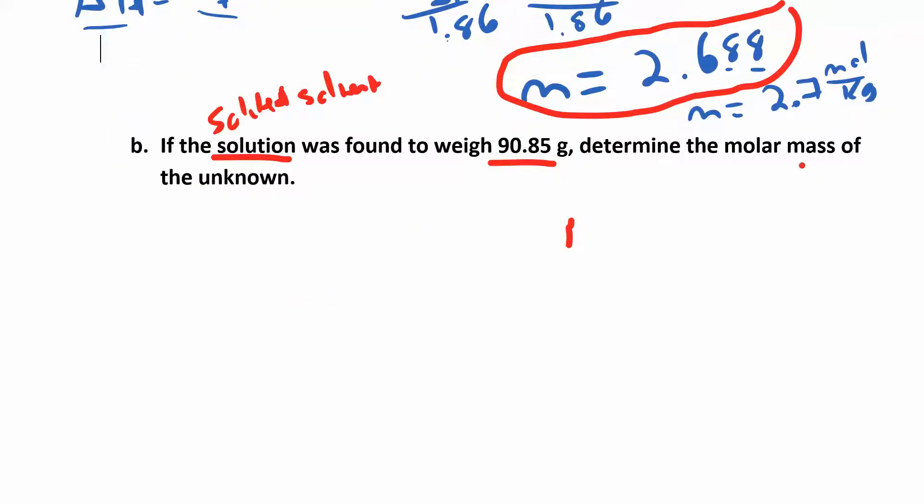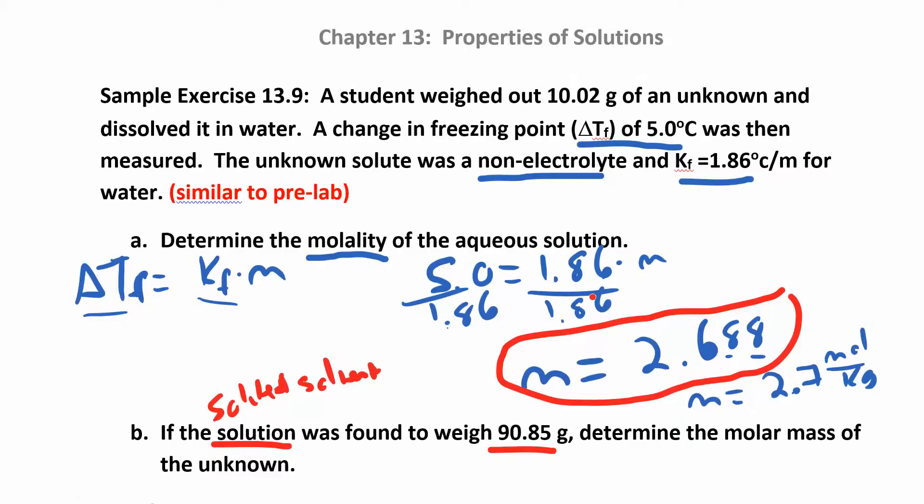We want to find the molar mass of the unknown. Molar mass is the grams of the unknown - grams per mole of the unknown. So I know the grams of the unknown because I started there. This is my unknown - I weighed out 10.02 grams. I already know that part. I just need to find the moles of the solute.